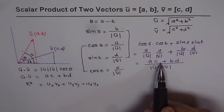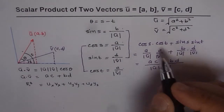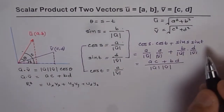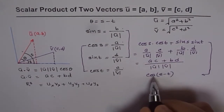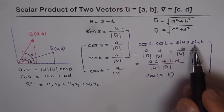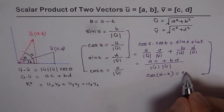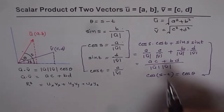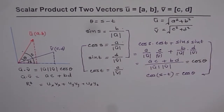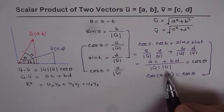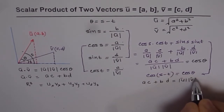From the trigonometric identity, cos(S)·cos(T) + sin(S)·sin(T) equals cos(S minus T). Since S minus T equals theta, this equals cos(theta). Therefore, (AC + BD) / (|U|·|V|) = cos(theta). Cross-multiplying gives: AC + BD = |U|·|V|·cos(theta). That is exactly the formula we are looking for.